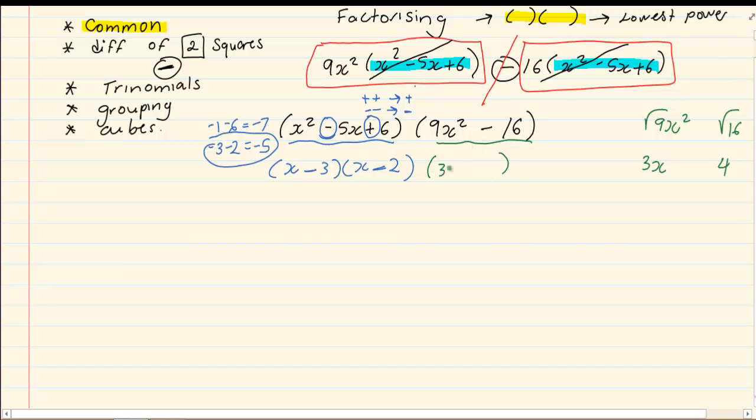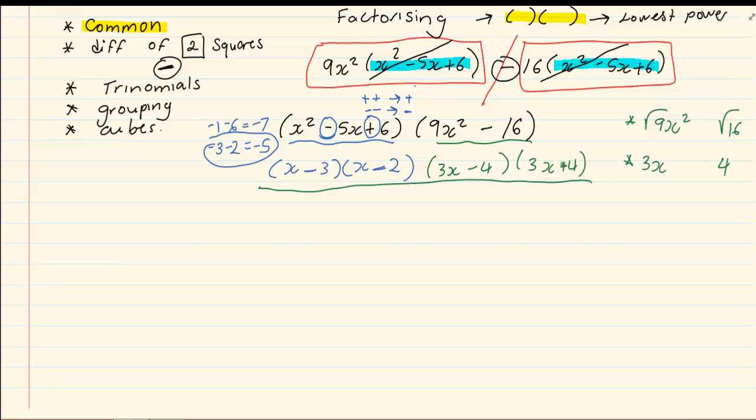This gives me 3x and this gives me 4. So, in the first bracket, we have got 3x minus 4. And in the second bracket, we have got 3x plus 4. Now, when you look at the question, we have completely factorized because there is only one term. Number 2, they are at the lowest powers. Let's do another example.